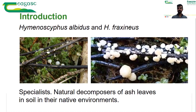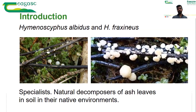In Europe we have a very similar fungus called Hymenoscyphus albidus which does the same thing — when ash leaves fall on the soil these fungi will colonize them, making them look black, and in the summer will produce small white mushrooms on the ash leaves. They are both specialists and natural decomposers of ash leaves in their native environments.